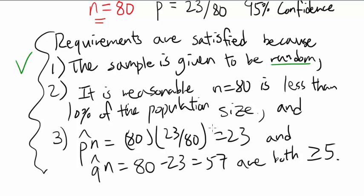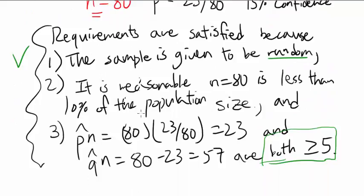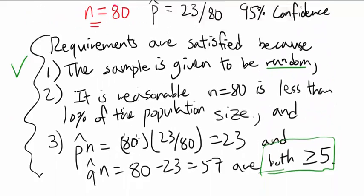The first one is random, second one for independence, and third one to approximate this with normal distribution. We can go ahead and construct the confidence interval.